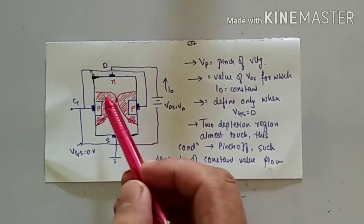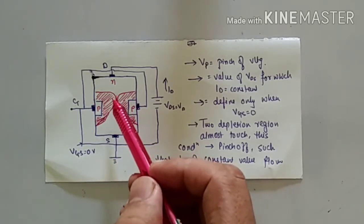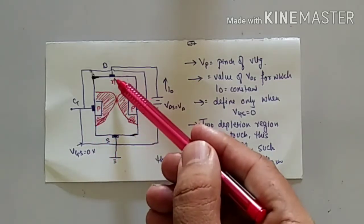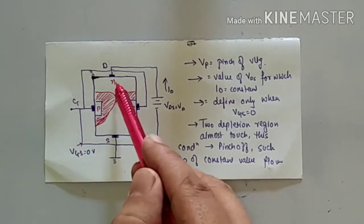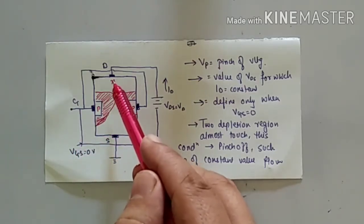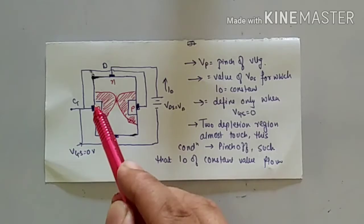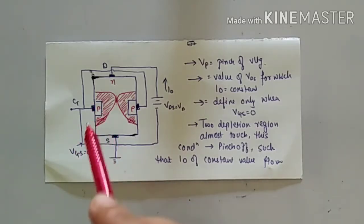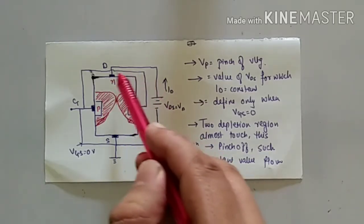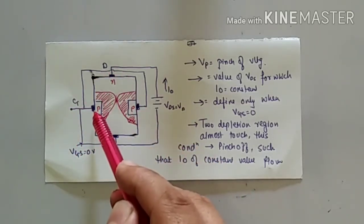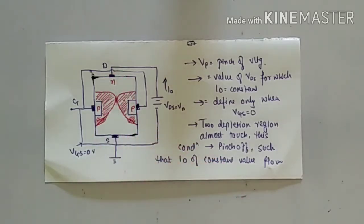How is it possible that the depletion region is high on one side and low on the other, and how is this depletion region formed? This depletion region is formed due to the gate. At the left side here is the drain and at the source side it is N-type, and at the gate it is P-type. VGS is zero means the gate is at lower potential, and the N-type is at higher potential because 10V is coming here.